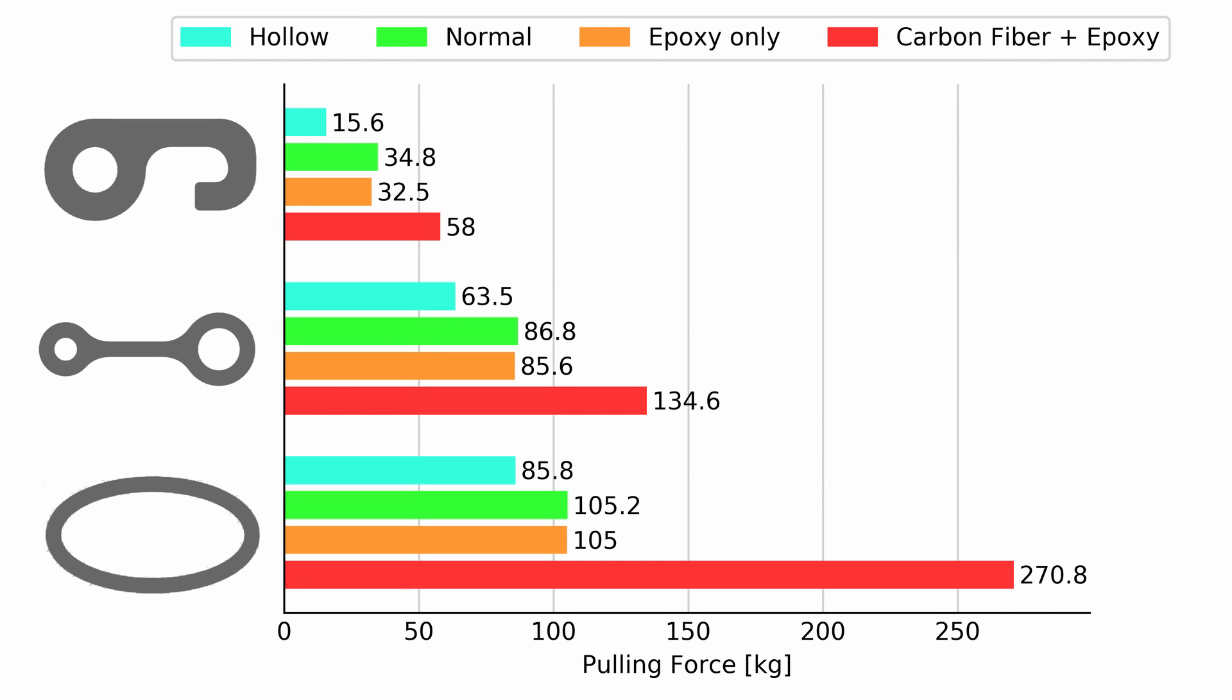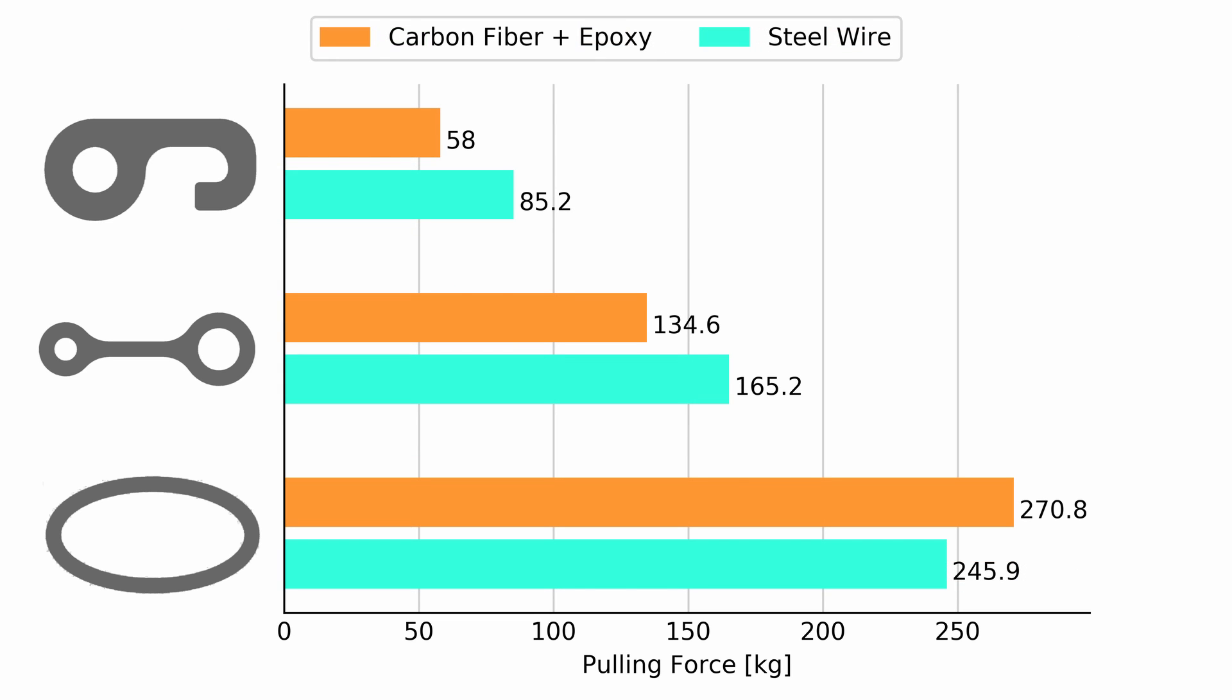The carbon fiber reinforced parts show a significant increase in strength compared to the normal parts. If we compare it to the steel wire reinforced parts, we can see that it performs worse in bending as well as pulling situations.